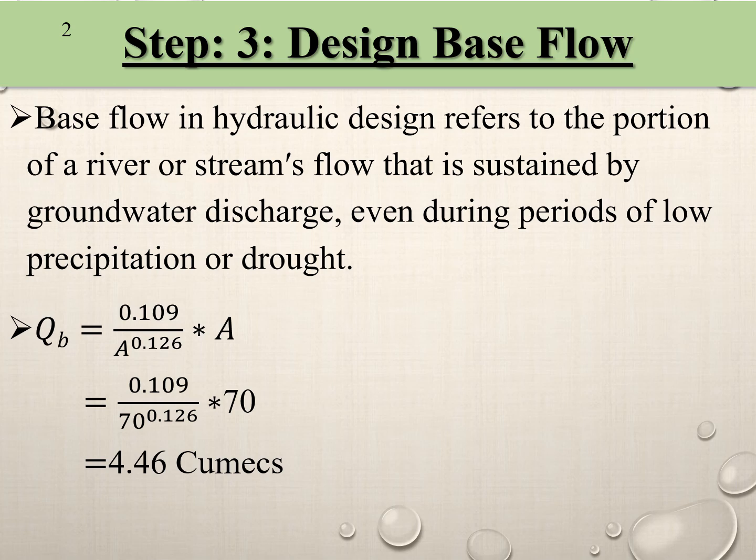Base flow can be obtained by the equation: qb = 0.109 divided by A raised to 0.126, multiplied by A, where A is the area of the catchment — here taken as 70 square kilometers. So qb is obtained as 4.46, which is taken as the design base flow.